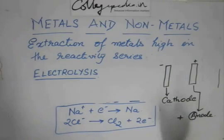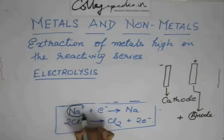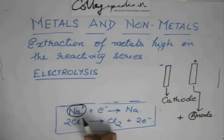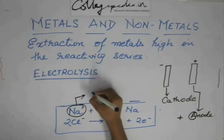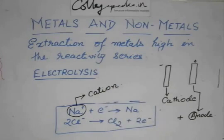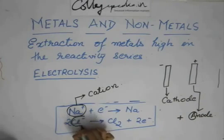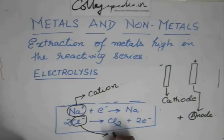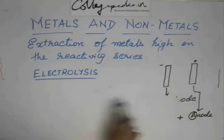But the thing is that this Na+ ion moves towards the cathode. So this Na+ ion is called a cation, and the Cl- ion moves towards the anode. So this Cl- ion is called an anion.